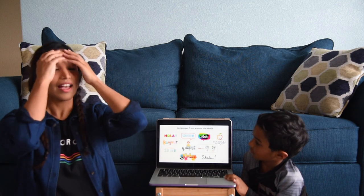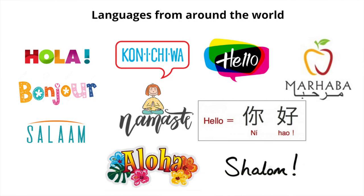Now let's look at languages from around the world — everyone says hello, but in a different way. Hola is hello in Spanish. Bonjour is hello in French. Salaam or Assalamualaikum is hello in Middle Eastern countries. Konnichiwa is hello in Japanese. Namaste is hello in Hindi. Aloha is hello in Hawaiian. Hello is used in America. Marhaba is also used by Arab people. Nihao is hello in Chinese. Shalom is hello in Hebrew, used by people from Israel.